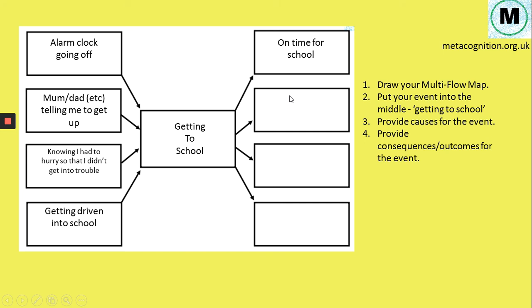So those are the causes of the event, and then what are the outcomes of the event? So that's the next stage. So you think, I got to school on time, that's one outcome. You got to speak to your friends before school started. It meant that you got to lessons on time and you learned a lot, and it meant that you got to ask the teachers questions.